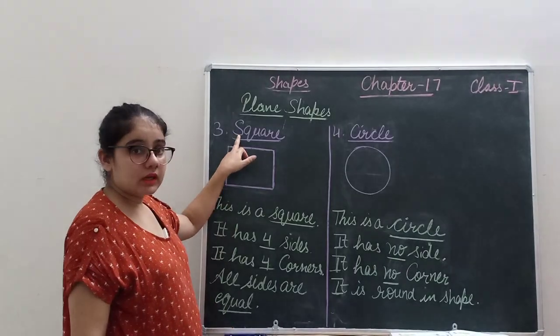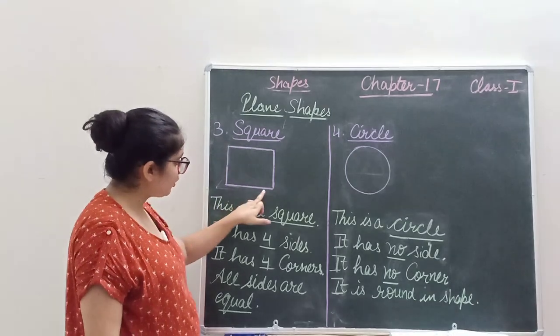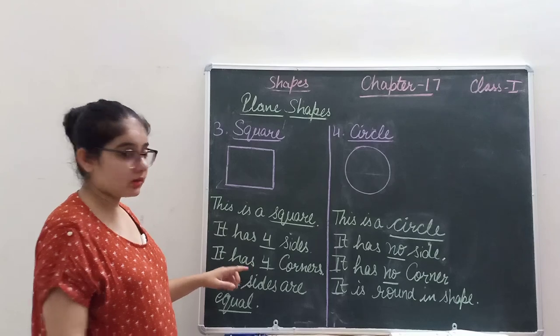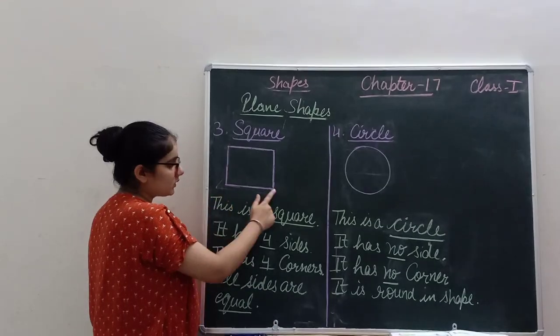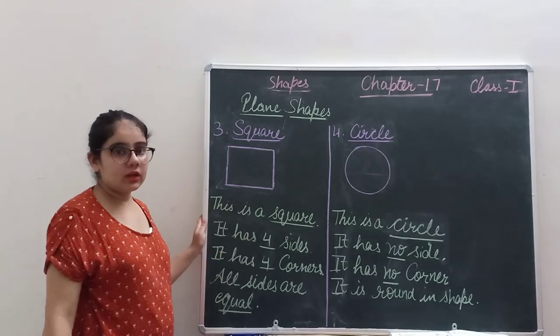Now come to square. A square has four sides. One, two, three and four. It has four corners. One, two, three and four. So all sides of a square are equal.